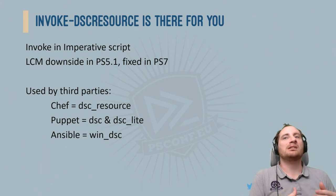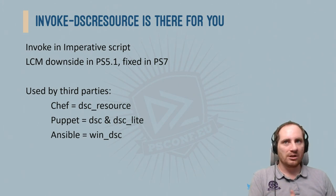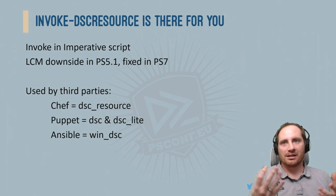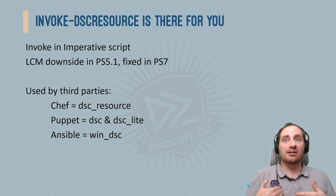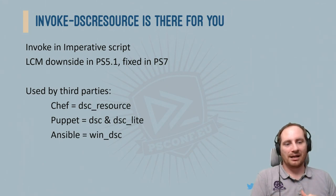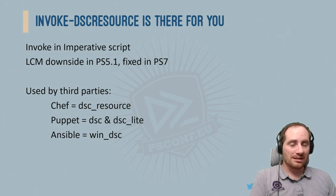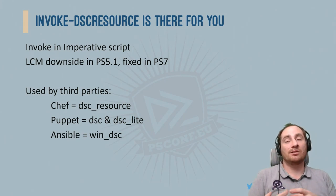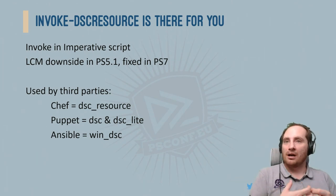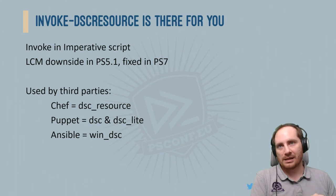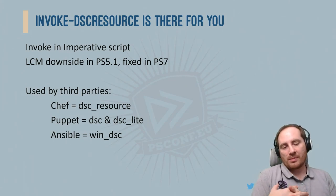The way Invoke-DSCResource works in PowerShell 7 is different — you don't need elevated WMI access. The caveat is you're missing the Run As capability, because it's going to run in your current PowerShell 7 session. You'll have to make sure that session is running as the right user. But troubleshooting is going to be easier. If you're using Chef, Puppet, Ansible, or other tools, they're likely using Invoke-DSCResource underneath — Chef has the dsc_resource resource, Puppet has the dsc and dsc_lite modules, and Ansible has the WinDSC module. So all of those can consume DSC resources that already exist.